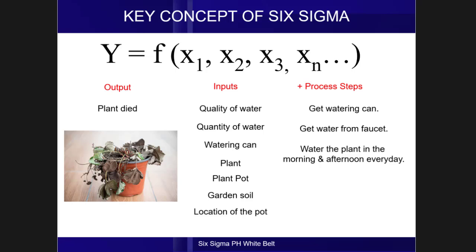What we do next is we analyze the inputs and process steps together with information coming from experts, from books, and from other resources, and identify which among the Xs are the root causes. Now, based on all of the data and information we have gathered, we have identified the following as the root causes.